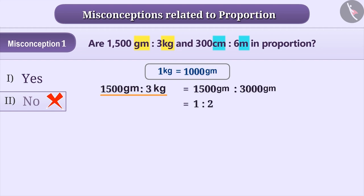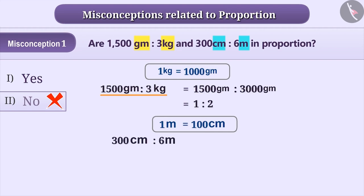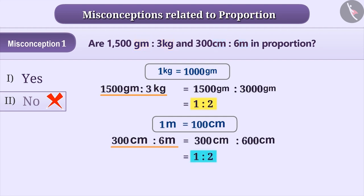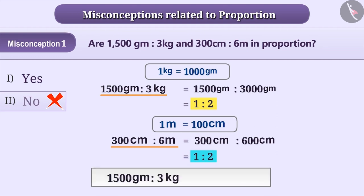Similarly, 1 meter is equal to 100 centimeters. Therefore, 300 centimeters is to 6 meters equals 300 centimeters is to 600 centimeters. Thus, 300 centimeters is to 6 meters is equal to 1 is to 2. Since both the ratios are equal, therefore we can say that 1500 grams is to 3 kg and 300 centimeters is to 6 meters are in proportion.